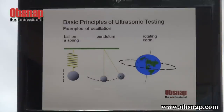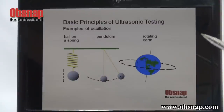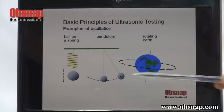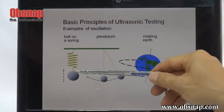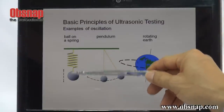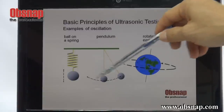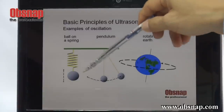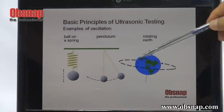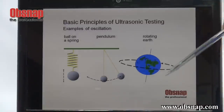In order for us to explain this basic principle of ultrasonic testing, I will need to share what is called oscillation. Oscillation is actually an object that is moving back and forth — say, a pendulum moving left to right, or rotating. This is also called oscillation.